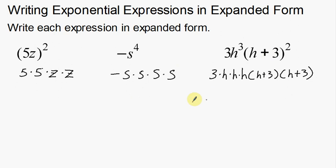Notice that these parenthesis here are very different from the parenthesis we had over here. On this first one, we got rid of the parenthesis—we just have 5, 5, z, and z. But on this one, we had to keep them because I have two of these quantities, two of the h plus threes. So I've got to keep my parenthesis in my expanded form.